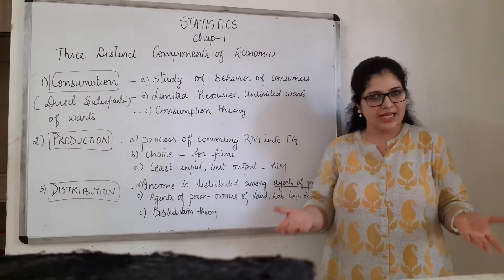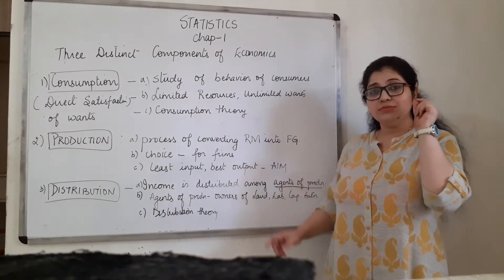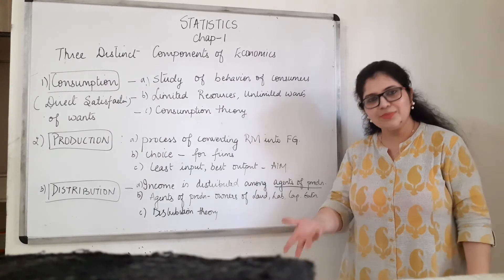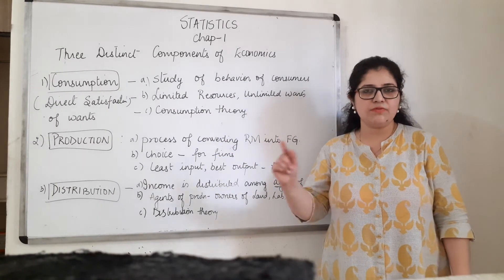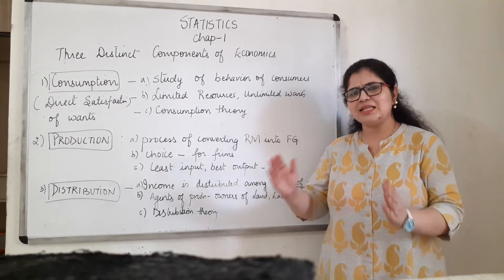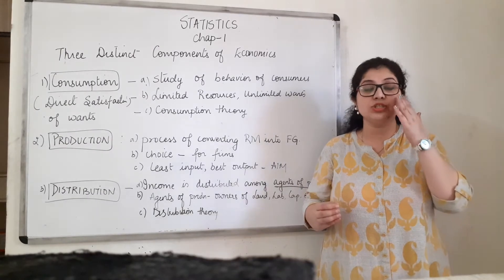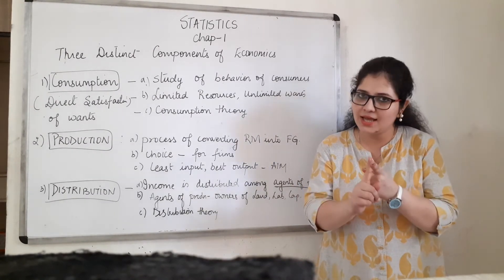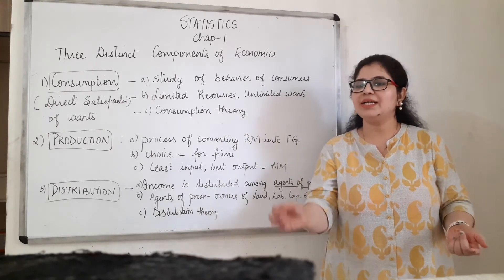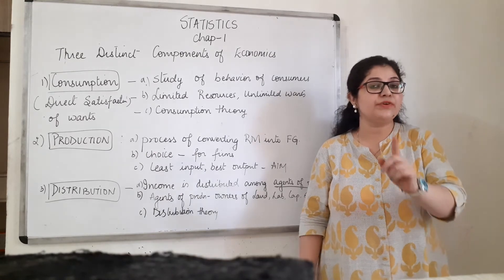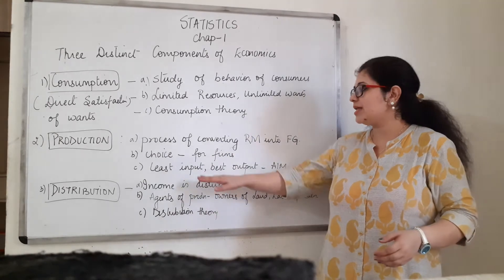The second activity is production. Production is the process of converting raw material into finished goods. The producer also has to make choices because resources are limited but can be used in different ways. The producer has to think about where to buy raw materials and how to use them so that profit is maximized. This study of producer behavior is called production theory.